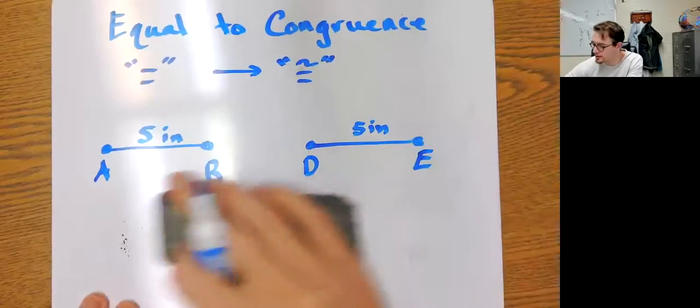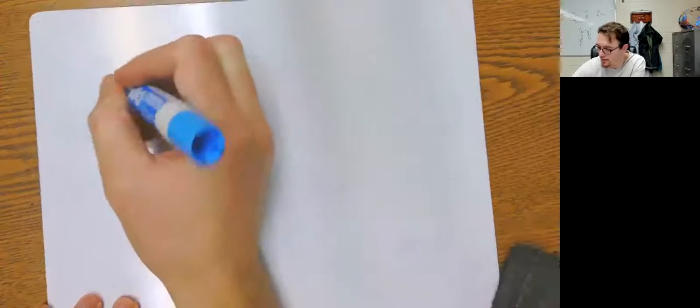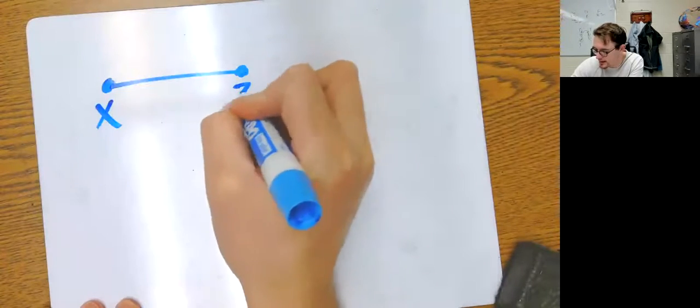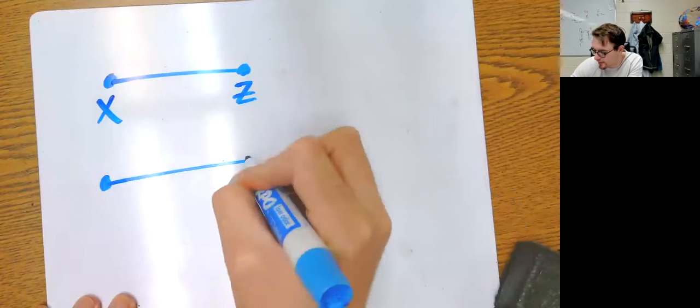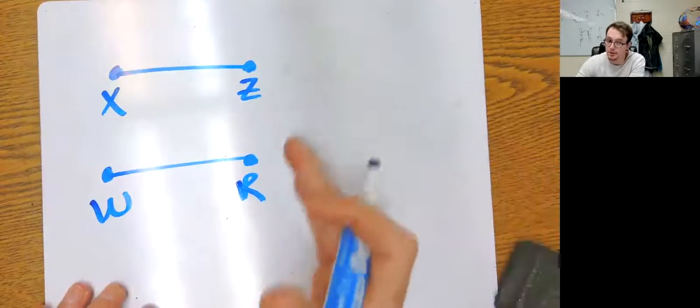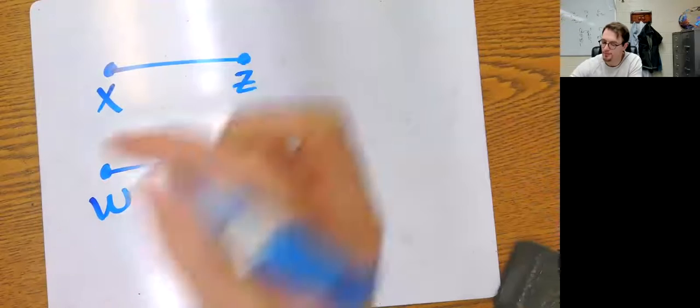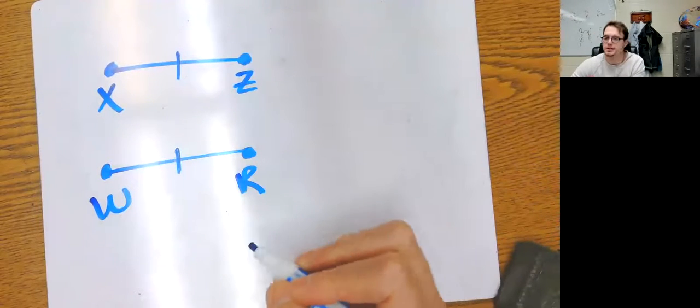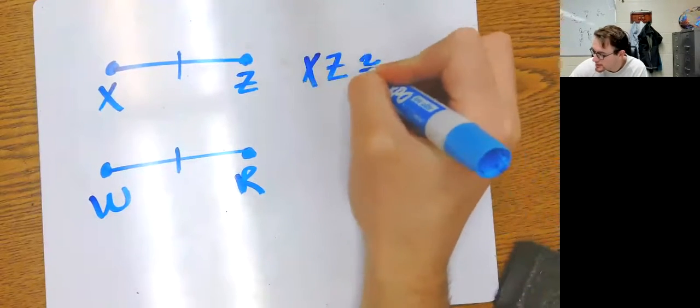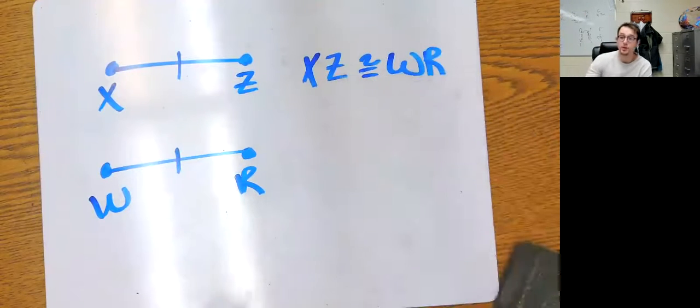Another way you will see congruence is with special tick marks. If I have XZ and WR, and again note these should be capital letters because they're points, if I have a tick mark and a tick mark - we call those tick marks, just a dash - that means that XZ is congruent to WR. That's what the tick mark means.